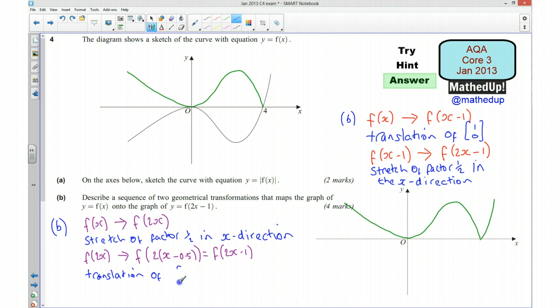So my sequence of transformations in this case is going to be a stretch of a factor of half in the x direction followed by a translation of 0.5, 0 so 0.5 units to the right. So if we have a look at this again that would mean that this ordinate here where the x coordinate is 4 if it was going to stretch of a factor of a half in the x direction that would become 2, it would then shift because of the translation of 0.5, 0 it would then translate 0.5 to the right so it would go to 2.5.